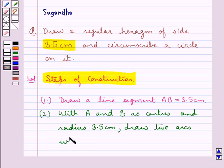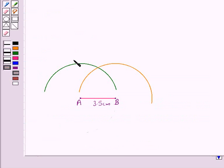So we have drawn these two arcs taking A and B as centers and radius equal to 3.5 cm, and these two arcs intersect at the point O.